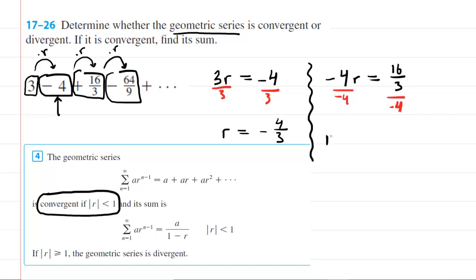So now we would have r is equal. OK, so here you're going to do a little keep change flip. You'll keep the 16 thirds. You'll change the division here to multiplication. And then you will reciprocate the negative 4. So you'll have 1 over negative 4. If we multiply this out, we get 16 over negative 12. And if we reduce that, we still get negative 4 thirds. So that's just another way you could confirm that the common ratio is negative 4 thirds.